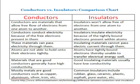To summarize the difference between conductors and insulators, we have here the comparison chart. Conductors are materials that allow free flow of electrons from one atom to another, while insulators won't allow free flow of electrons from one atom to another. Conductors conduct electricity because of the free electrons present in them, while insulators insulate electricity because of the tightly bonded electrons present within atoms.